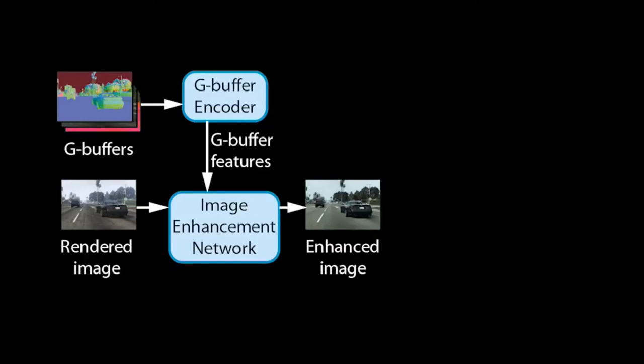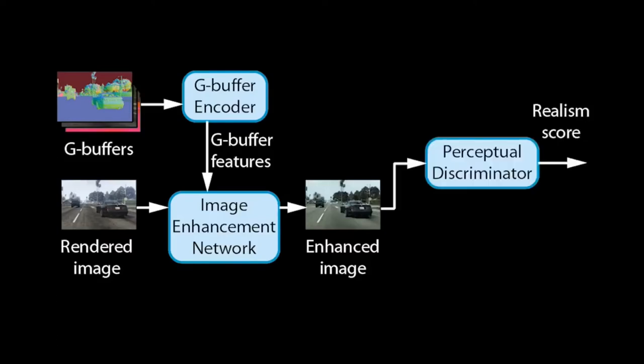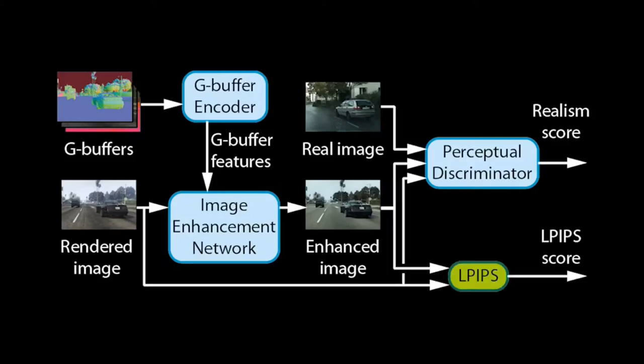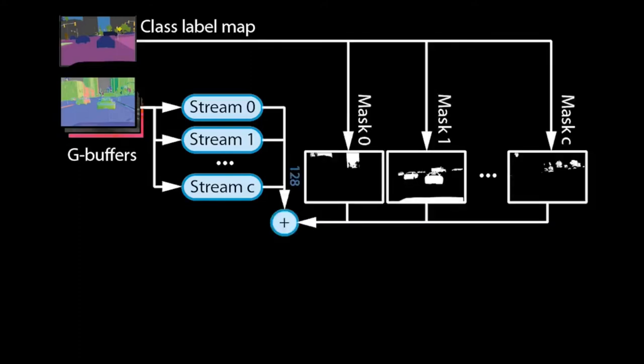To train our networks for enhancing realism, we employ a perceptual discriminator. For each image it takes in, it produces a realism score. To make it understand what the real world looks like, we also feed it real photos. To ensure that our networks retain the structure of rendered images, we add them to the discriminator inputs and employ a perceptual loss. From the G-buffers, we can derive a semantic class label map which assigns an object ID to every pixel. We pass the G-buffers through multiple convolutional network streams and fuse the streams based on the object IDs, allowing the encoder to learn different ways of processing for each type of object — for example, trees will be treated differently from cars.